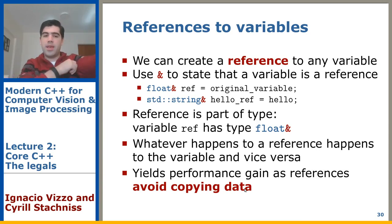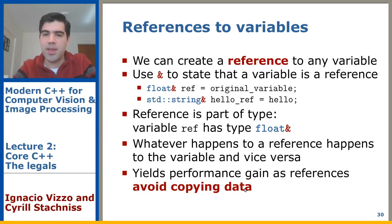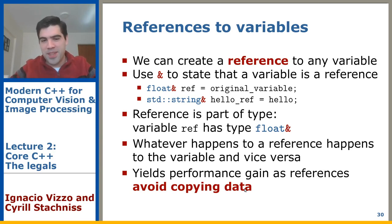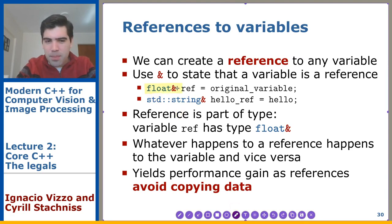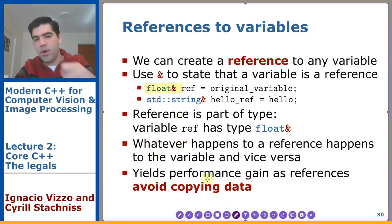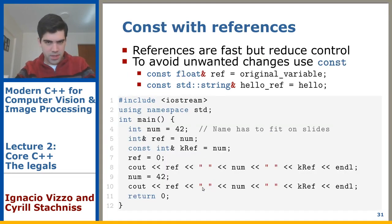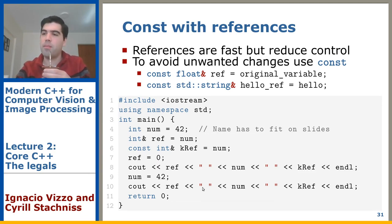You can also use references to variables. We'll see pointers and memory management at the end of the course. A reference to a variable is just a reference to that variable — keep in mind the reference is part of the type. Whatever happens to the reference also happens to the variable. References give you performance because you can avoid copying data. Here's an example of how to use const with references — I highly recommend you go check it out, compile it, and run it.